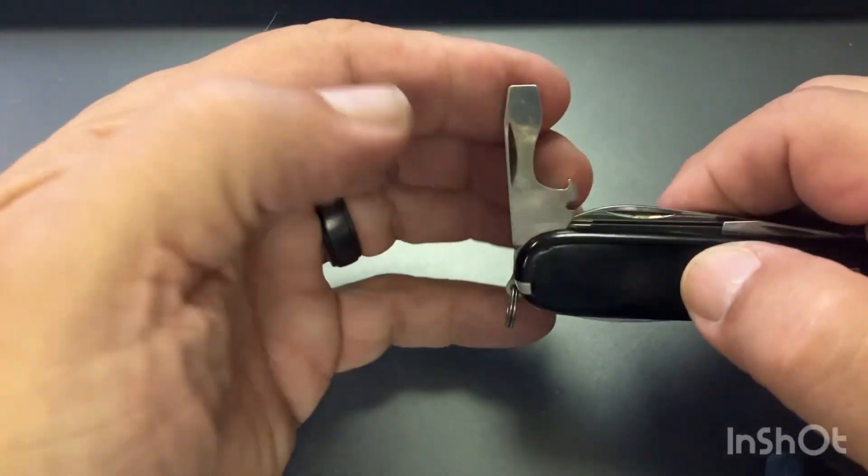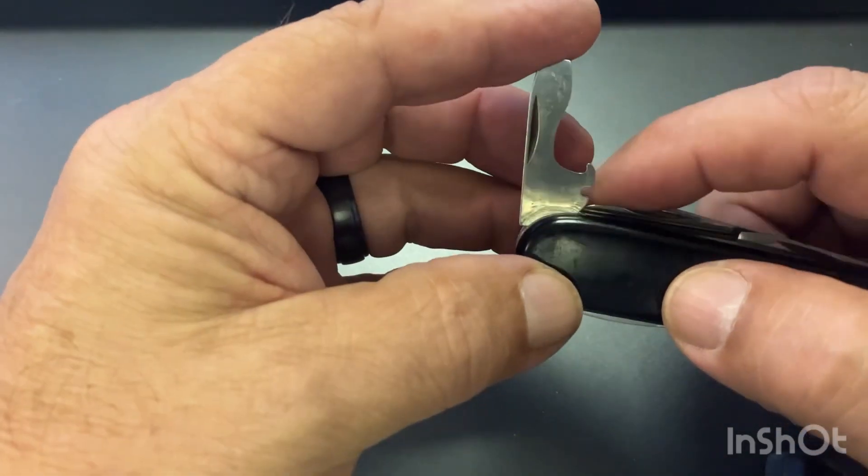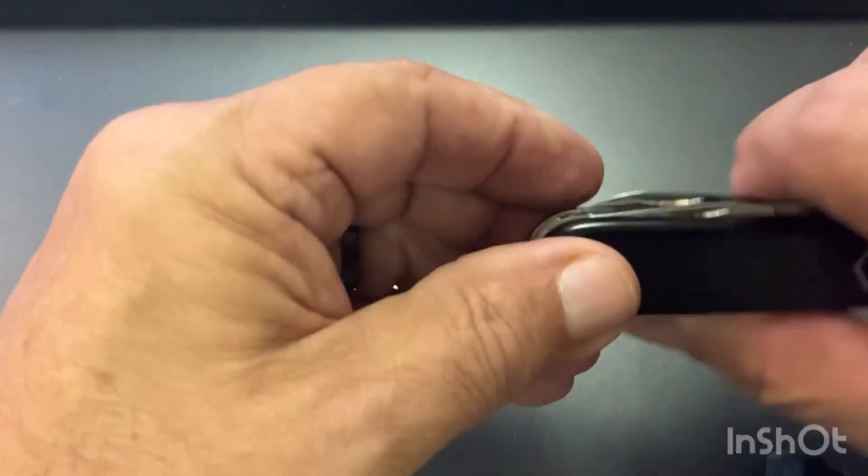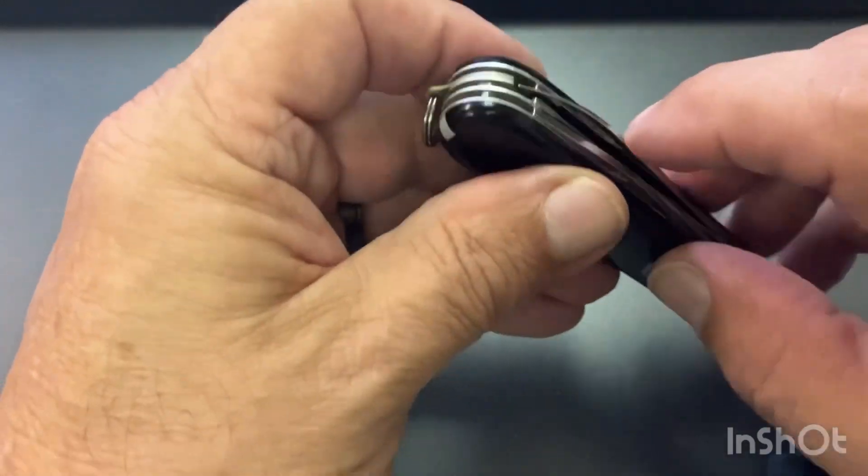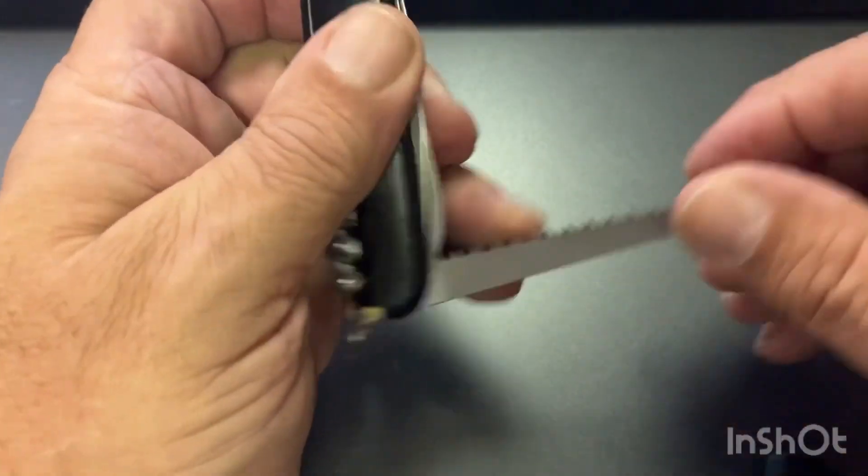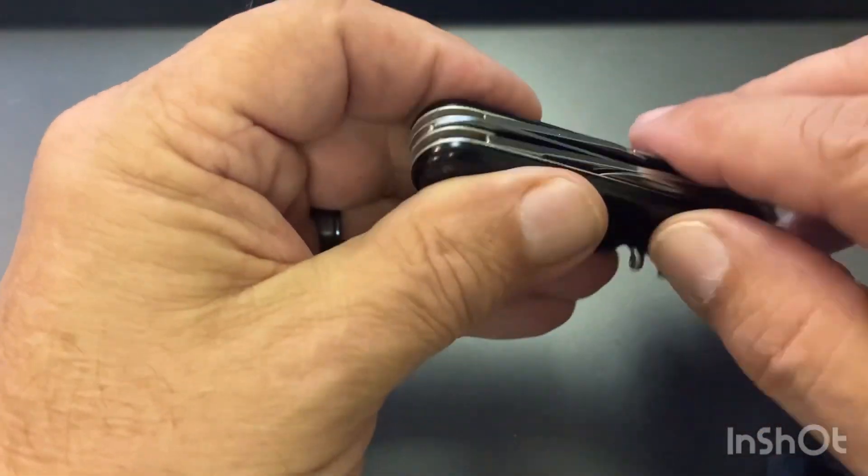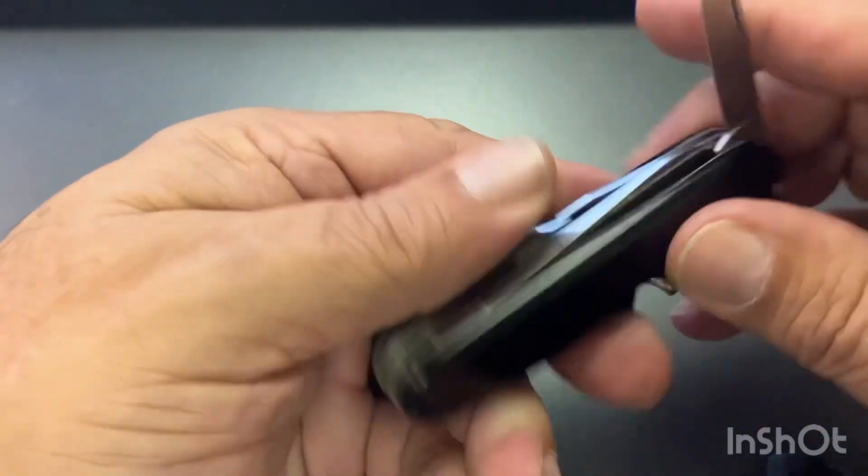The can opener is seven. You've got the larger flat tip, eight. Bottle cap lifter is nine. Wire stripper is going to be 10. You have your saw, we'll count that as 11. Small blade and large blade, so that's going to come out to be 13.